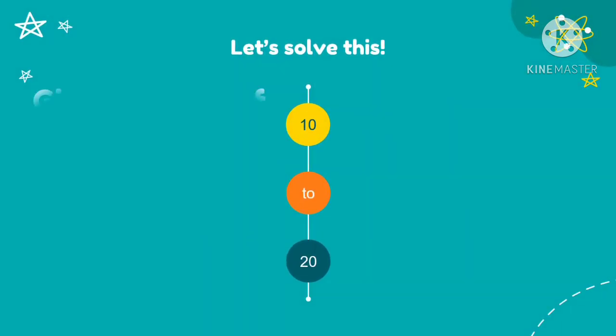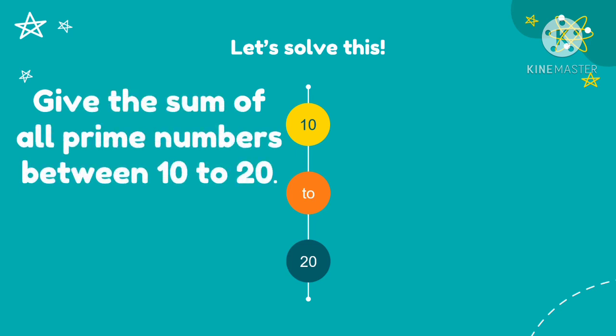Let's solve another problem. Give the sum of all prime numbers between 10 to 20. So we are going to get the sum of all prime numbers between 10 to 20 only. So the first step is we list down all the prime numbers between 10 to 20. So the prime numbers that are in between 10 to 20 are 11, 13, 17, and 19.